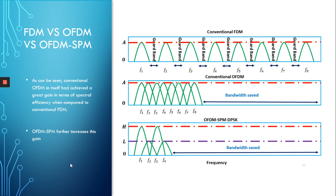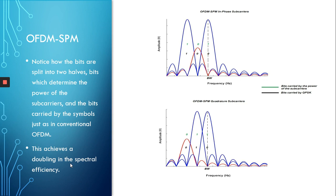This is a doubling of the spectral efficiency — OFDM-SPM is twice as efficient as conventional OFDM. In OFDM-SPM, you're going to have two streams of bits. The ones in green dictate the power of each subcarrier. In our case, we only have two power levels: a 1 means a high-power subcarrier level, and a 0 means a low-power subcarrier level.